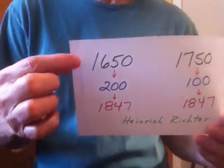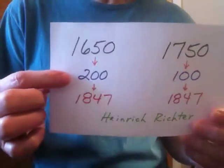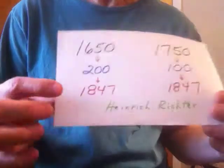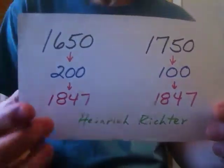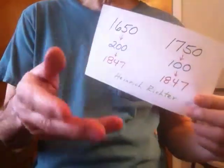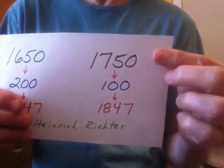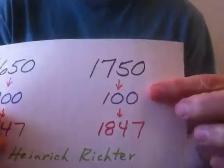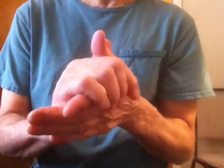Let's say it was accepted in 1650 — we don't know because we weren't there — but 200 years transpired until finally in 1847 Heinrich Richter, a writer, said he had a different idea and proposed a different staff notation system. Even if the staff were embraced in 1750, still 100 years would have passed until Heinrich said he'd like to try something different.